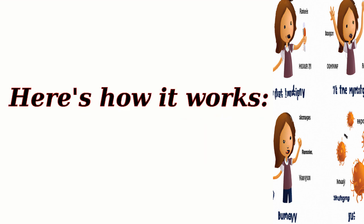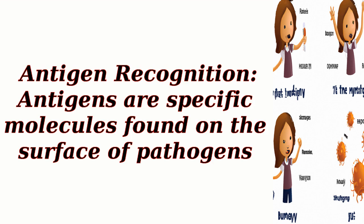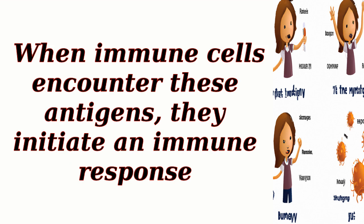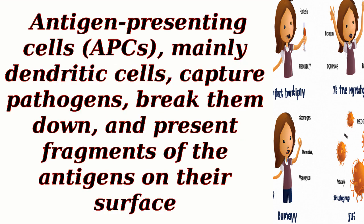Antigen recognition: antigens are specific molecules found on the surface of pathogens. When immune cells encounter these antigens, they initiate an immune response. Antigen-presenting cells (APCs), mainly dendritic cells, capture pathogens, break them down, and present fragments of the antigens on their surface.